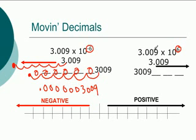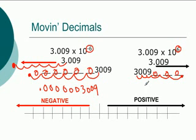Now if we have 3.009 times 10 to the positive 6, that means we're going to be moving the decimal 6 spaces to the right, filling in zeros for each empty place. That ends up being 3,009,000.